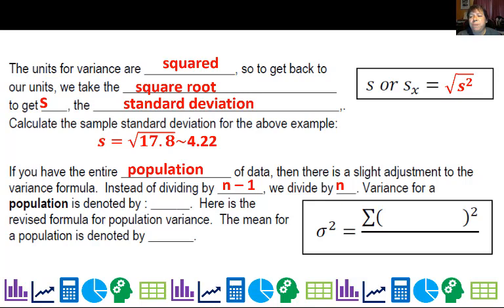So variance for population is denoted by sigma squared. And actually, that will make the whole thing a little bit smaller, because we're not having to worry about variation of sampling. So we would have x minus mu over n. And some of you are going to say, what's that symbol mu?